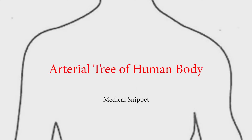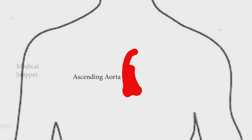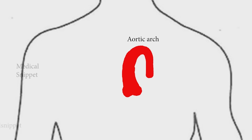Let's see the arterial tree of the human body. The aorta arises from the left ventricle as the aortic root, then forms the ascending aorta, continues as the aortic arch, and then continues as the descending thoracic aorta.